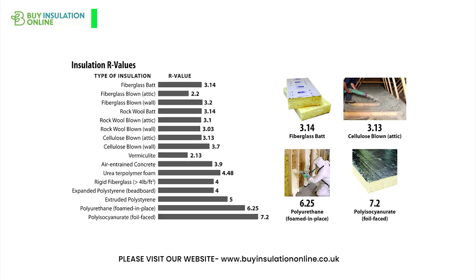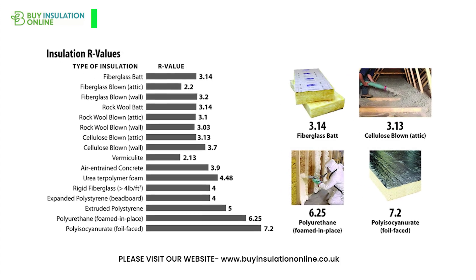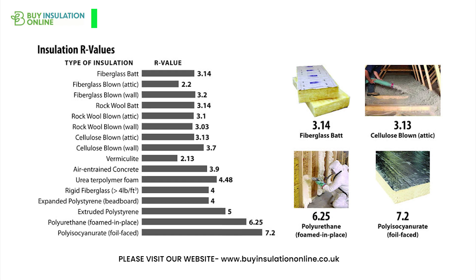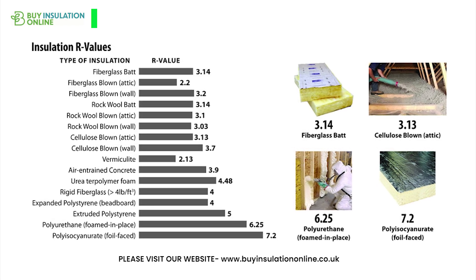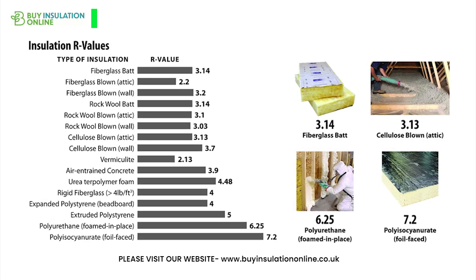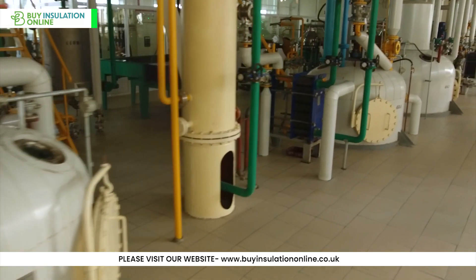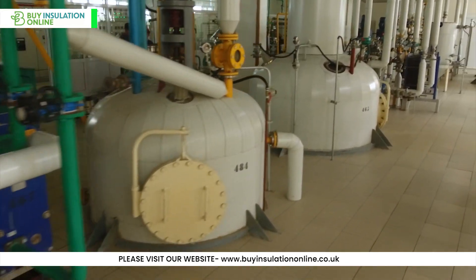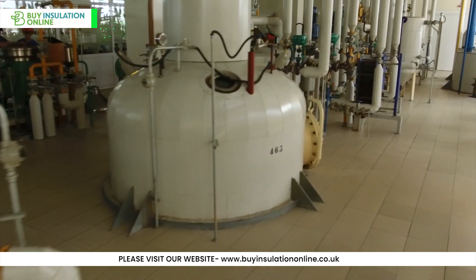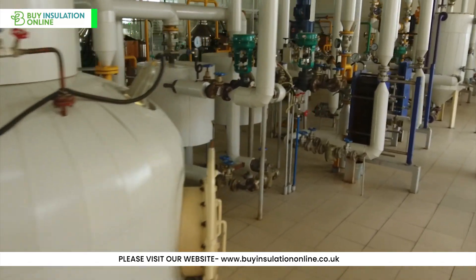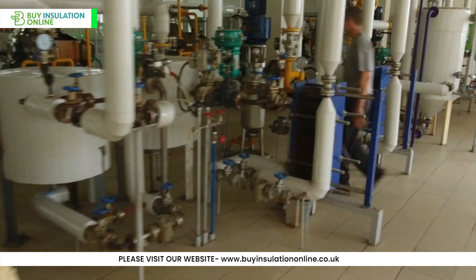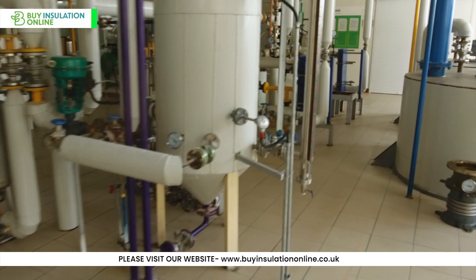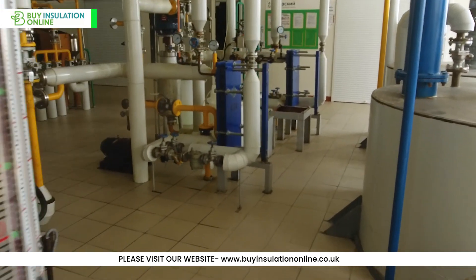This is converse to R value, where a higher number means better insulation. However, R value is rarely used in the UK to measure pipe insulation performance. The K value of a material can be determined through laboratory testing and is often used to compare the thermal performance of different insulation materials. Manufacturers will have conducted these tests which are verified by third parties, which allows us to know their K value.